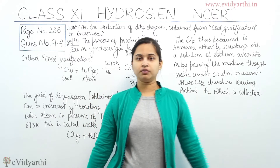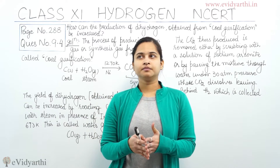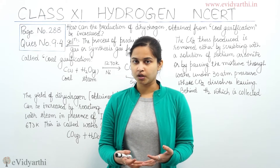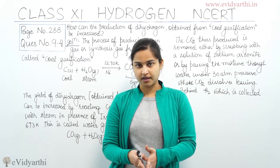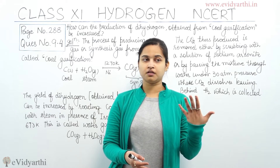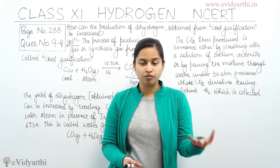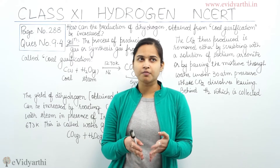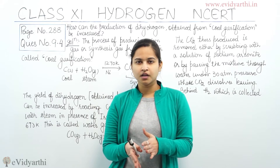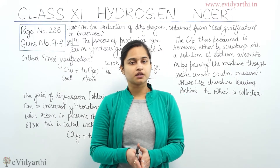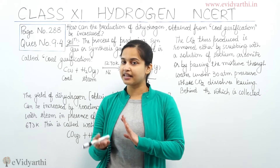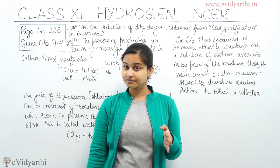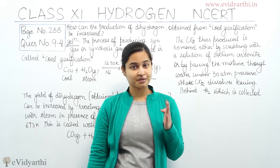In coal gasification, a syngas or synthesis gas is produced from coal. That process is called coal gasification. In this, carbon which we know as coal is reacted with steam at about 1273 Kelvin, and the catalyst used is nickel. So we get syngas, which is carbon monoxide plus dihydrogen (H₂).